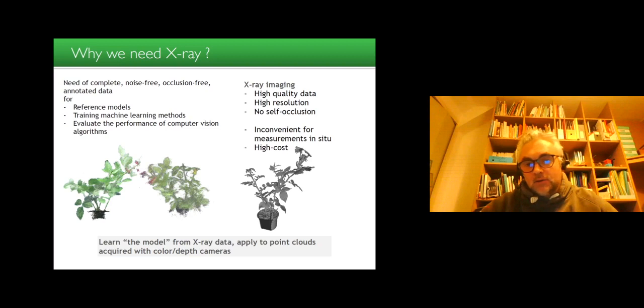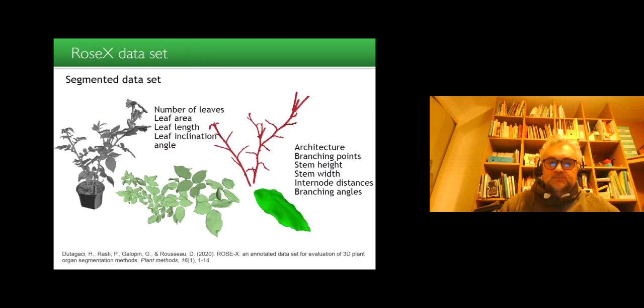So we produced in 2020, with Elin Duttagacci, the ROSEX dataset, which is a segmented dataset, where for each rosebush we have the number of leaves, the leaf area, the leaf length, the leaf inclination angle. We have the architecture, the branching points, the stem height, the stem width, internal distance, branching angles. Everything you want to learn from this data are there in the highest quality possible.